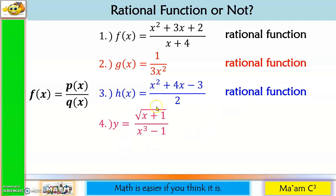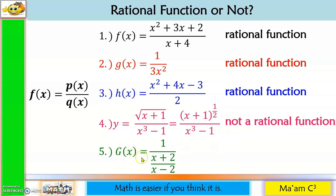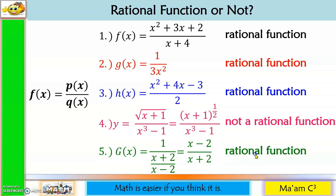Next: y = (√(x+1)) / (x³ − 1). The square root of (x+1) is equivalent to (x+1) raised to the 1/2, and 1/2 is not an integer. Therefore, our numerator is not a polynomial, hence this is not a rational function. Next: g(x) = 1 divided by (x+2)/(x−2). When simplified, this is equivalent to (x−2)/(x+2). Both the numerator and denominator are polynomials. Therefore, this is a rational function.